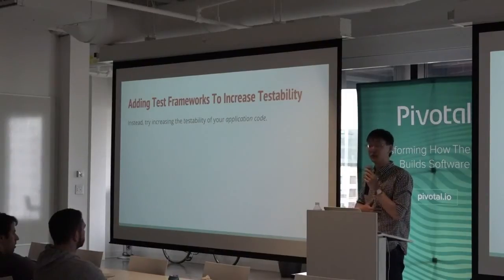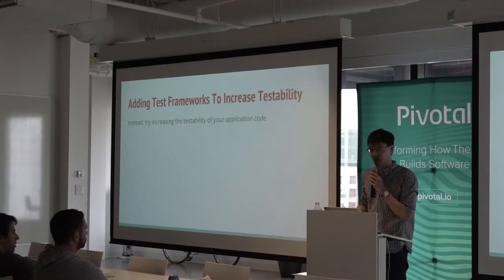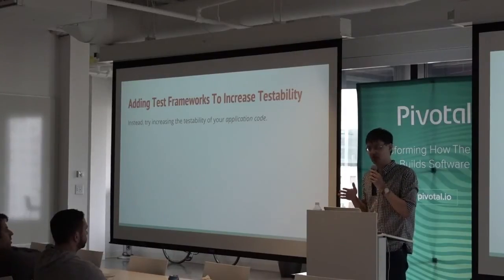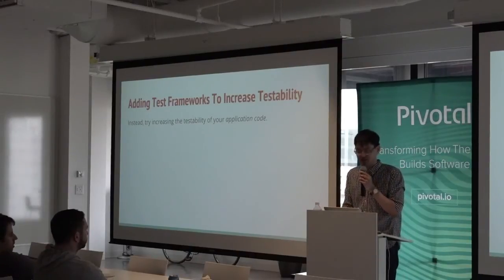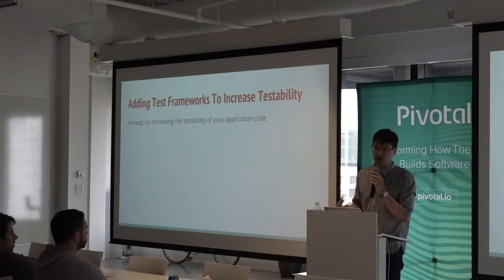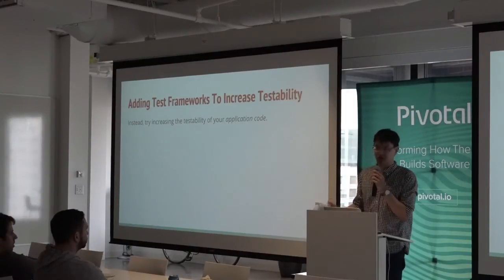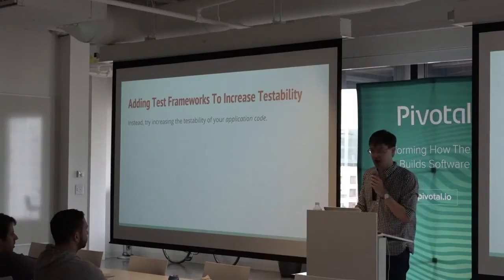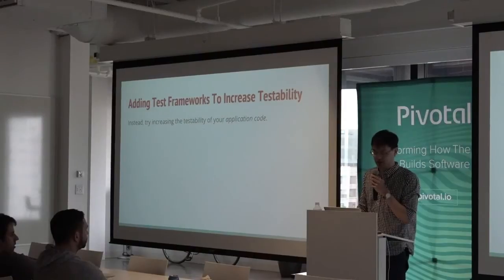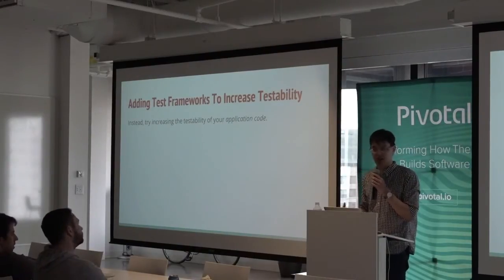Warning sign number one: adding test frameworks to increase testability. I think it's a really common crutch because you have not actually identified or exposed the problem in your code that is making it difficult to test — all you've done is applied band-aids. If you find yourself adding testing frameworks rather than thinking about why your code isn't as testable as it could be, that's a warning sign. Try writing your own interfaces and test doubles before you reach for Mockito or Cedar. It will quickly highlight whether you've written difficult-to-test code and are really just applying band-aids.